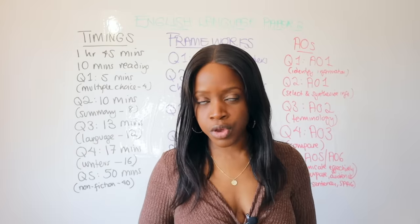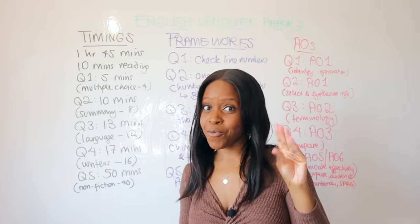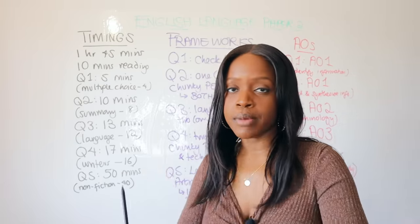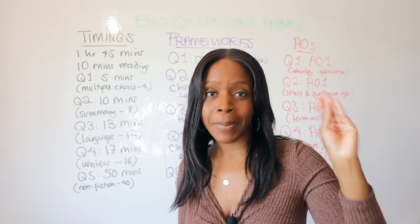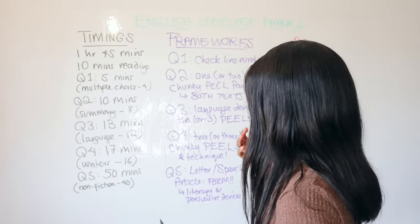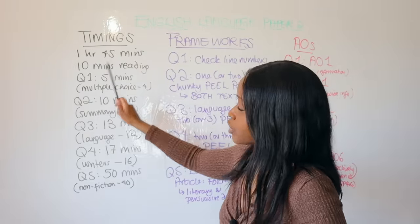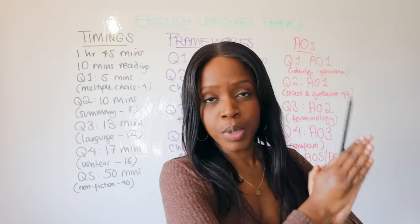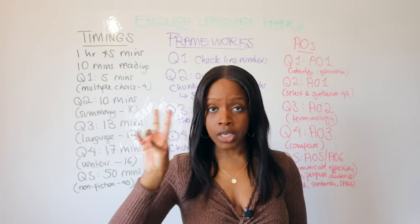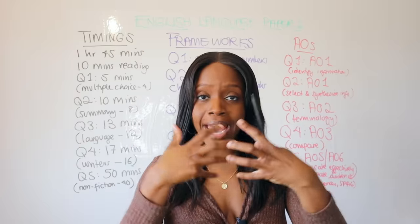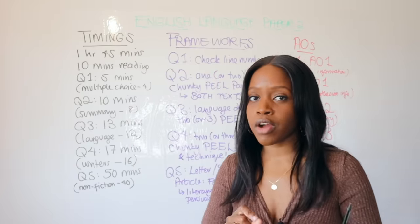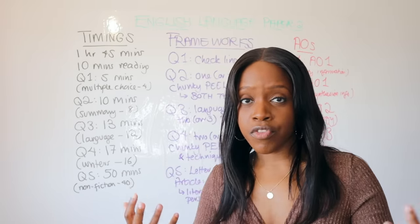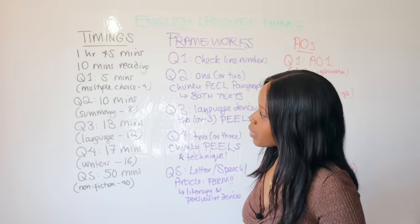Let's begin with timings — it's really important to manage your time so you don't run out, especially for the big markers in Questions Four and Five. For this final exam you have one hour 45 minutes. It's challenging because you have exactly the same time as Language Paper One but you're doing double the work — double the reading, and for Questions Two and Four you're comparing both sources.